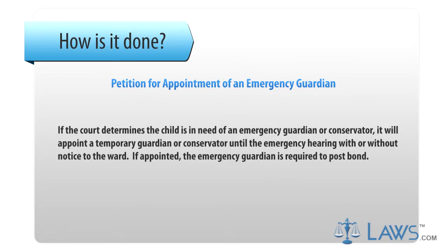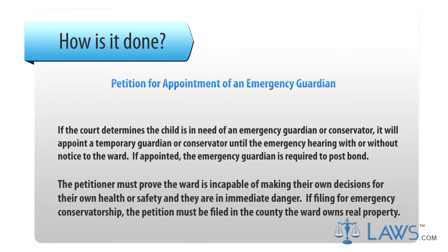If the court determines the child is in need of an emergency guardian or conservator, it will appoint a temporary guardian or conservator until the emergency hearing, with or without notice to the ward. If appointed, the emergency guardian is required to post bond. The petitioner must prove the ward is incapable of making their own decisions for their own health or safety and they are in immediate danger. If filing for emergency conservatorship, the petition must be filed in the county the ward owns real property.